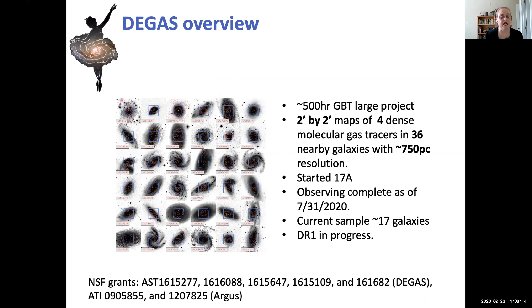So you can see on the left hand side of the screen, our initial sample. We proposed for 500 hours of GBT time, which we were awarded. We ended up doing about 300 hours over three years. Two by two arc minute maps of four dense molecular gas tracers. And our original sample is 36 galaxies with 750 parsec resolution. So the observing was started in 2017, a little over three years ago. And we finished up at the end of July in 2020, just a few months ago.